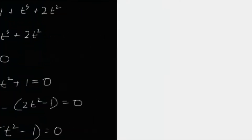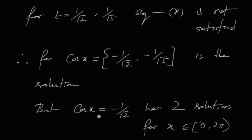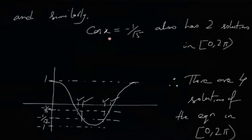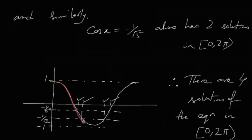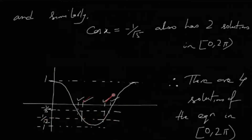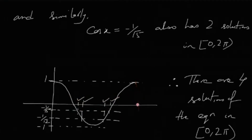Now we need the solutions in terms of x. For cos x = -1/√2, there are two values of x in [0, 2π) that satisfy this. Similarly, for cos x = -1/√5, there are also two solutions. You can see from the rough sketch of the graph of cos x that a horizontal line at y = -1/√2 intersects the curve at two points, and similarly for y = -1/√5. All four intersections lie within the interval [0, 2π).